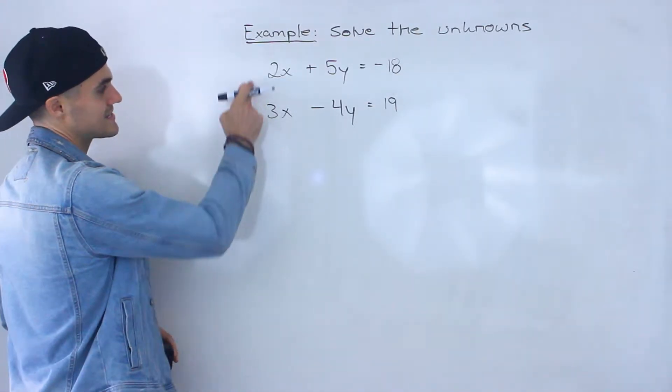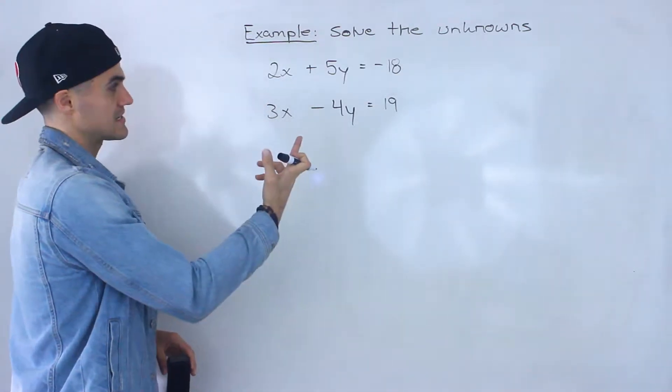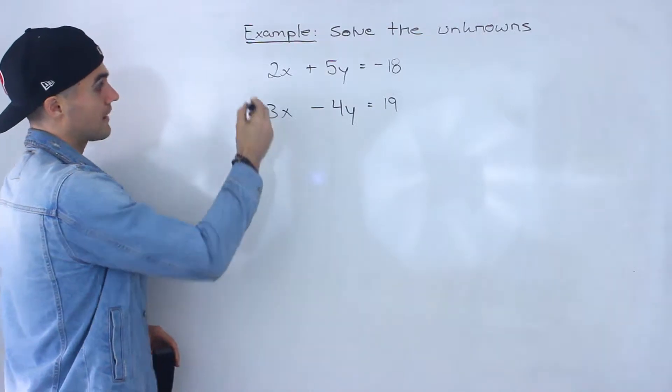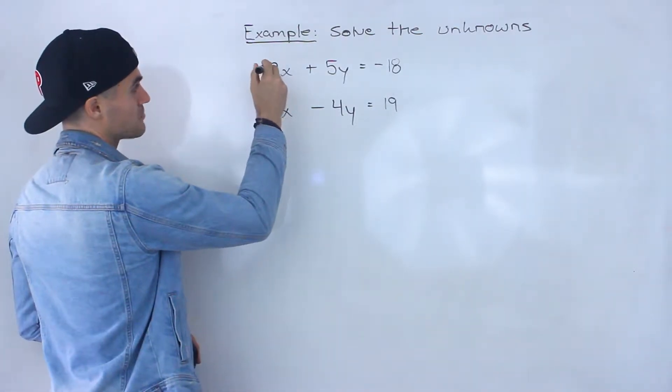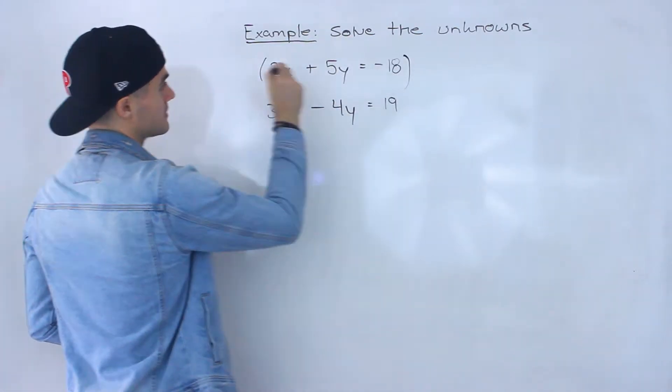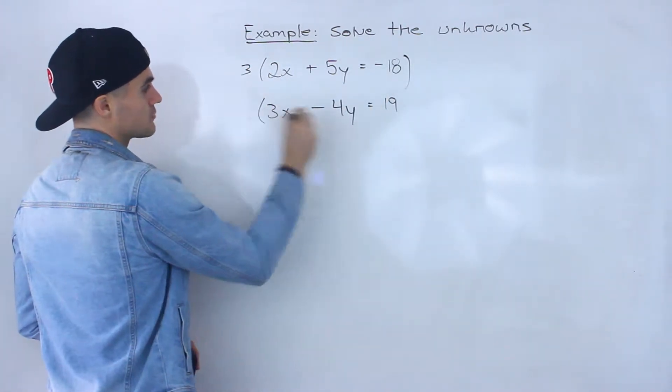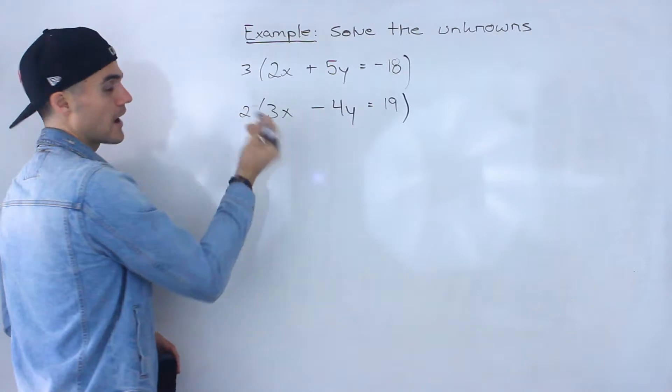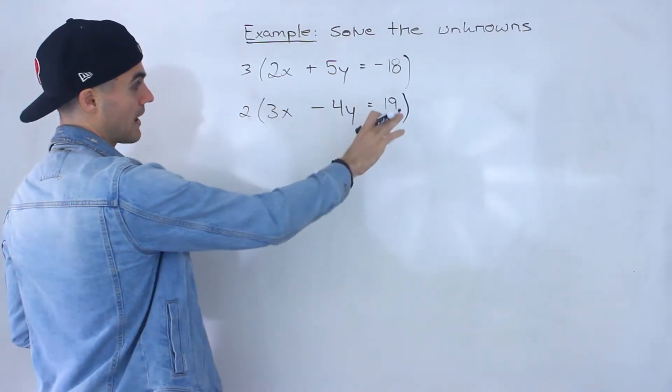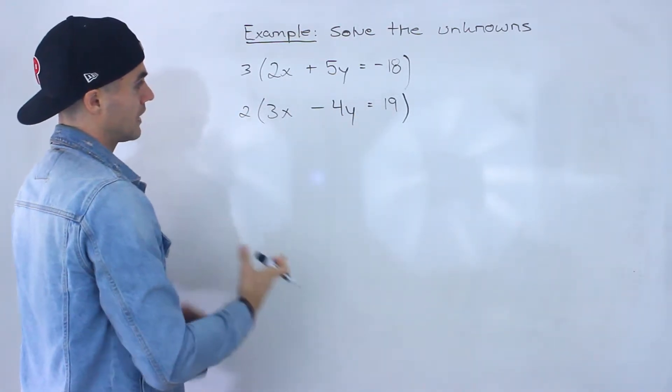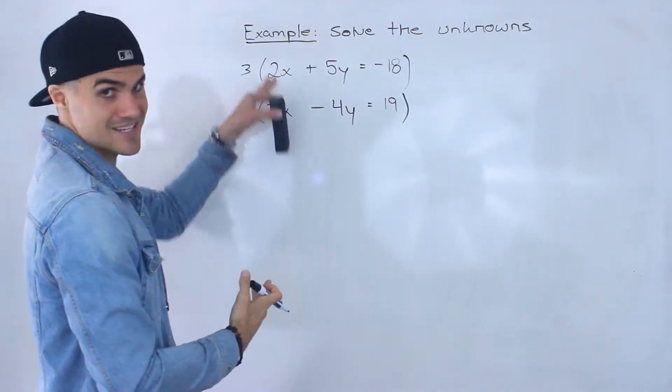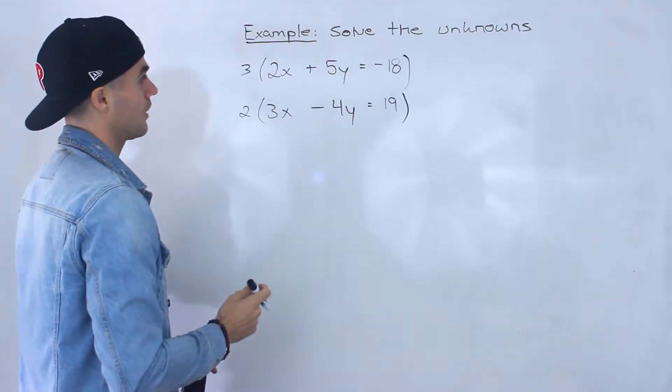So what I'm going to do is I'm going to try to get these x's here to be the same and the way I can do that is I can multiply this 2x by 3 but if I multiply this 2x by 3 I got to multiply everything by 3 and then this 3x I can multiply by 2 but then I got to multiply everything by 2 and notice when I do that then I'm going to have 6x in both of the equations.